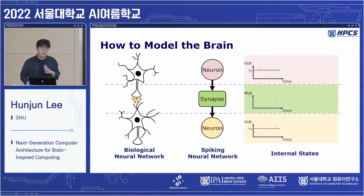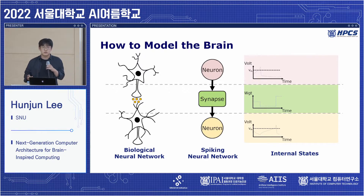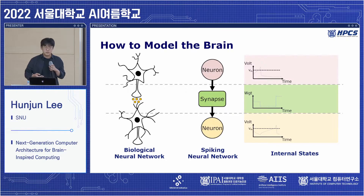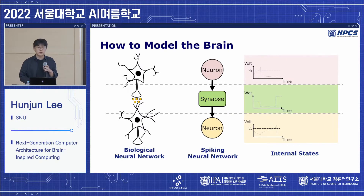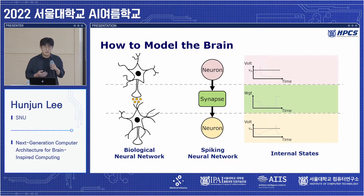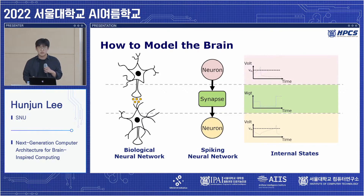But is existing hardware, such as GPUs or deep learning accelerators, sufficient to simulate the brain? To answer that, let's review Neuroscience 101. To study the brain, neuroscientists model it using spiking neural networks, or SNNs. The brain is modeled with two major components: a neuron and a synapse. These components keep time-varying states — a neuron keeps voltage as a state, and a synapse keeps weight.